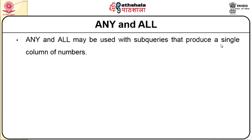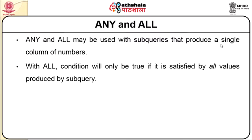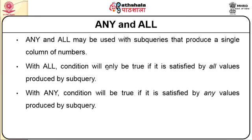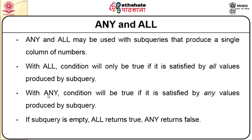Now we will look at the operators ANY and ALL. ANY and ALL may be used with subqueries that produce a single column of numbers. With ALL, the condition will only be true if it is satisfied by all values produced by the subquery. With ANY, the condition will be true if it is satisfied by any single value produced by the subquery. If the subquery is empty, ALL returns true whereas ANY returns false. SOME may be used in place of ANY.